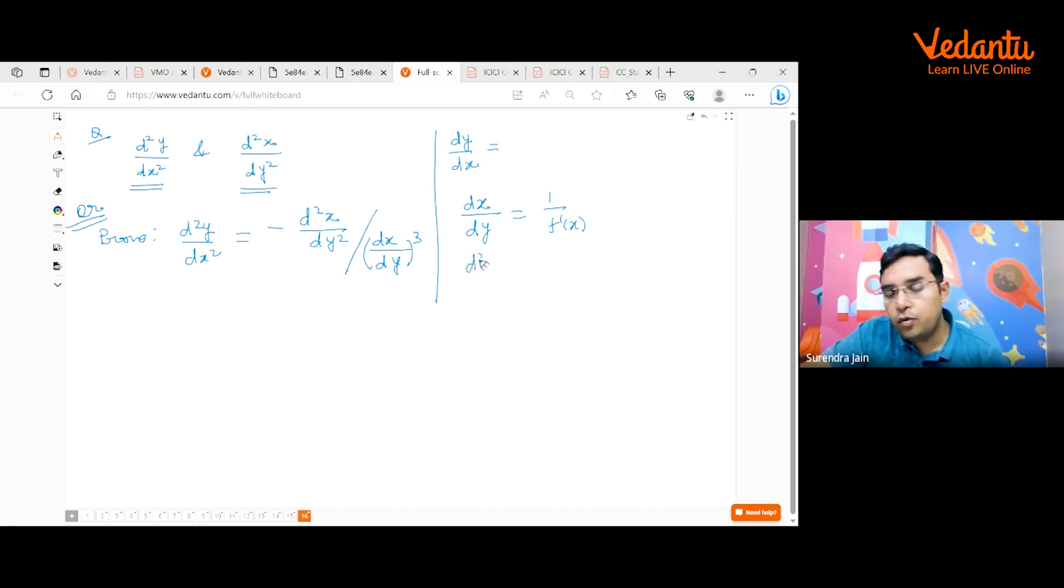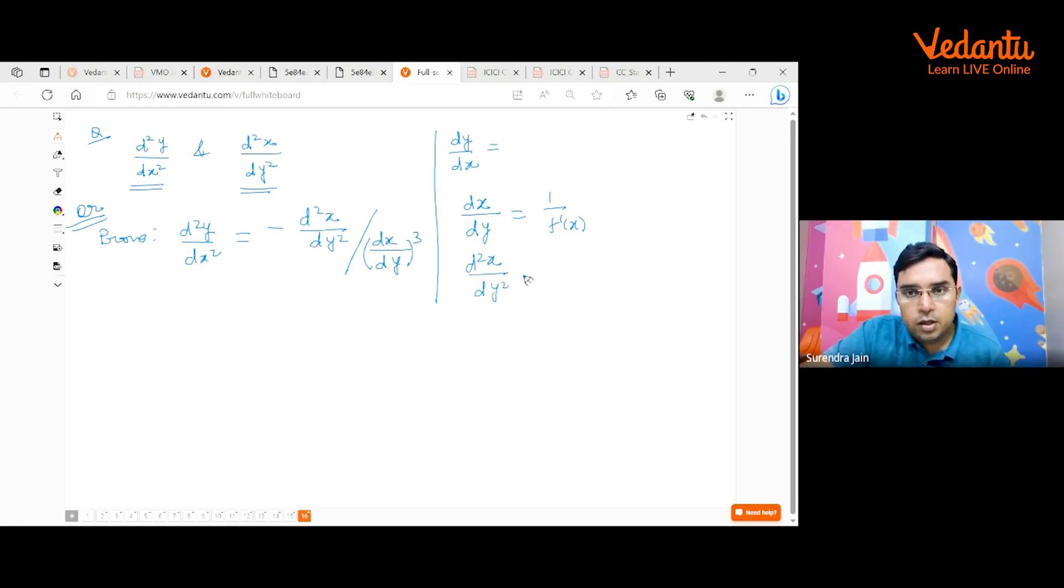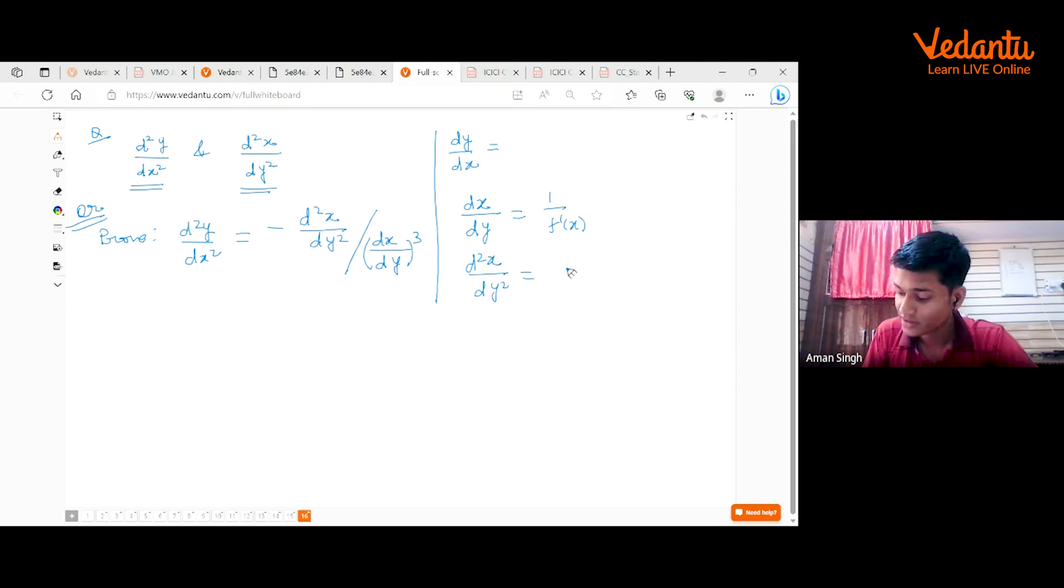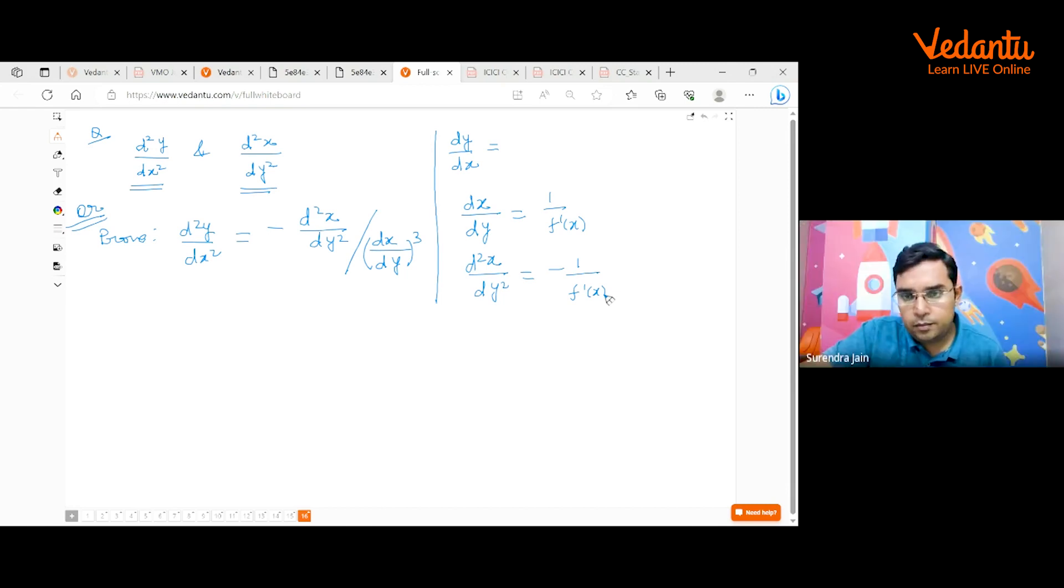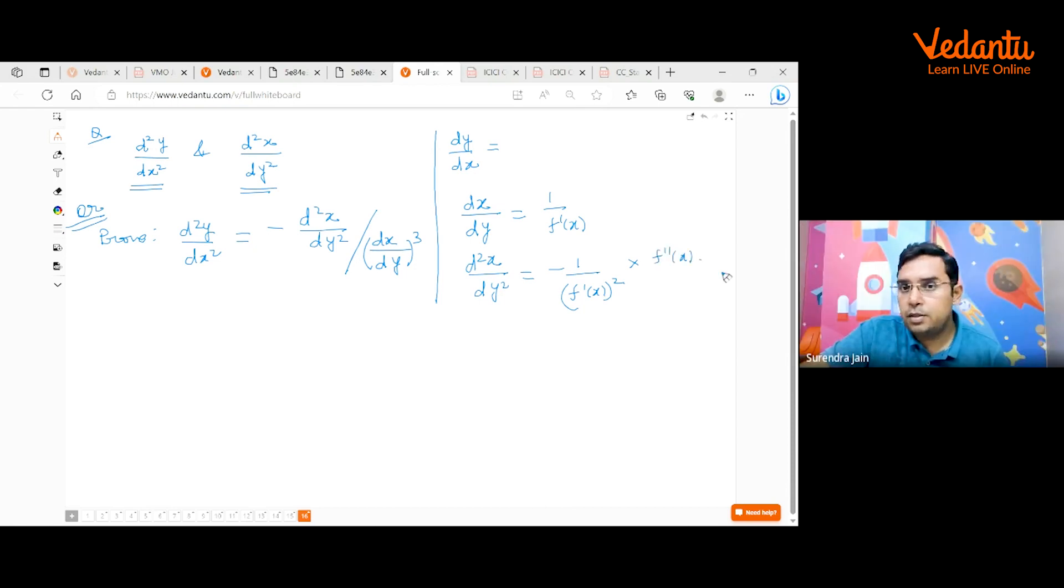Now you are differentiating again with respect to what? Y or X? Sir, Y. Okay. So if you differentiate with respect to Y, so you are saying we will be differentiating this with respect to Y. So what you will get? So minus 1 upon f'(x) square into f''(x). No, this step is not correct. Please see what is the mistake here.